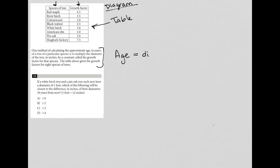So age is equal to diameter. And we're multiplying that by a constant called the growth factor. So age in years is equal to diameter in inches times the growth factor, which is provided in the table above.